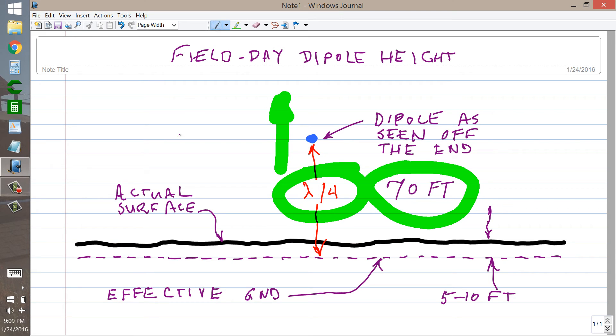Again, a half wave dipole, fed with 50 ohm coax, and using a balun coil.